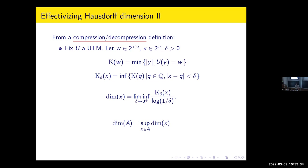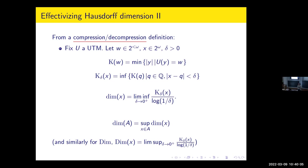There are versions for strong dimension and packing dimension, in which you mostly quantify over chains — the best and the worst case over chains. For instance, for information content, for the strong dimension, you take the worst case — you want this quantity, the delta-approximate Kolmogorov complexity, to be large everywhere.